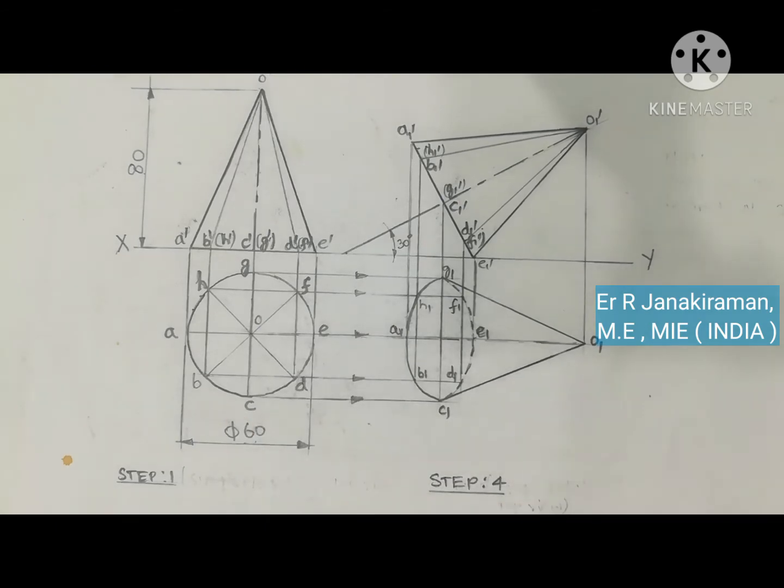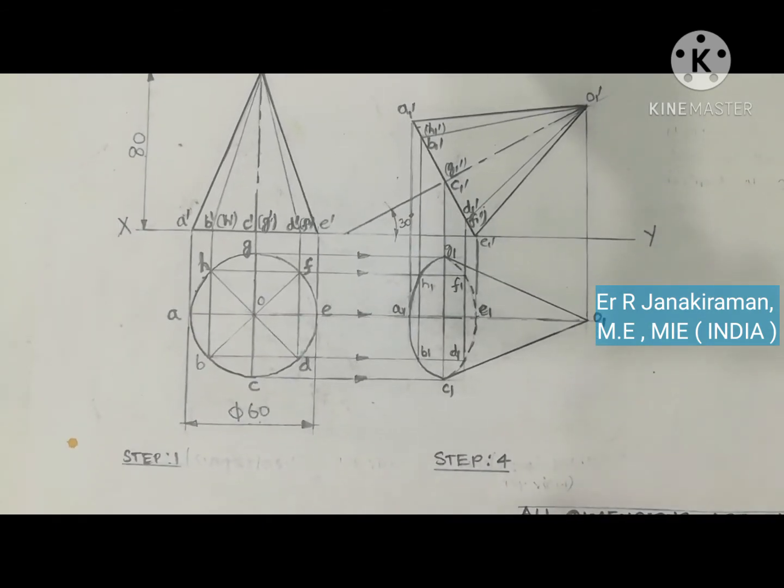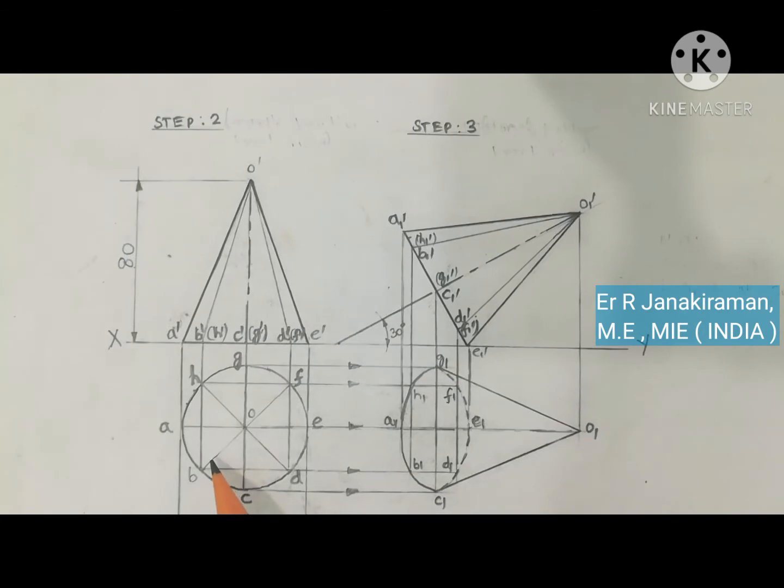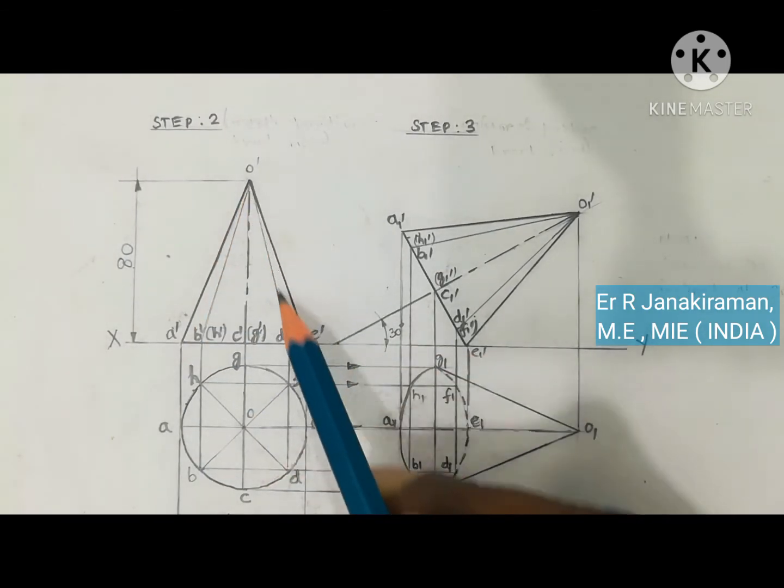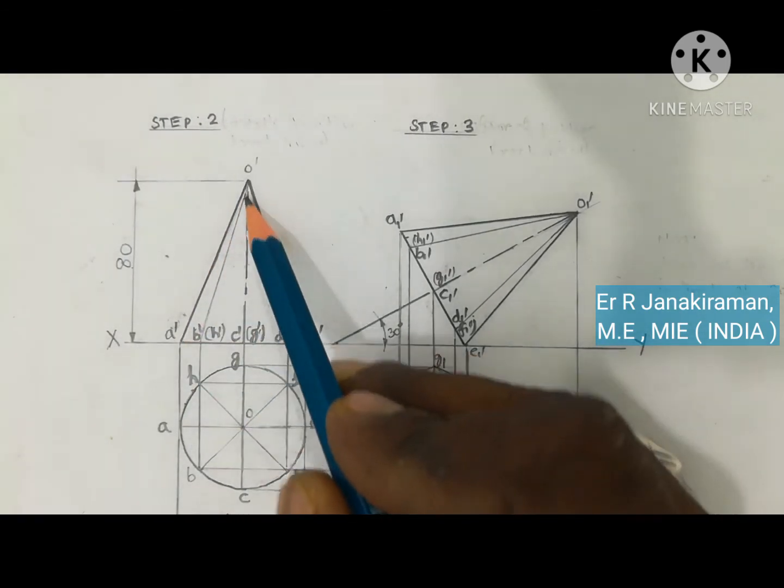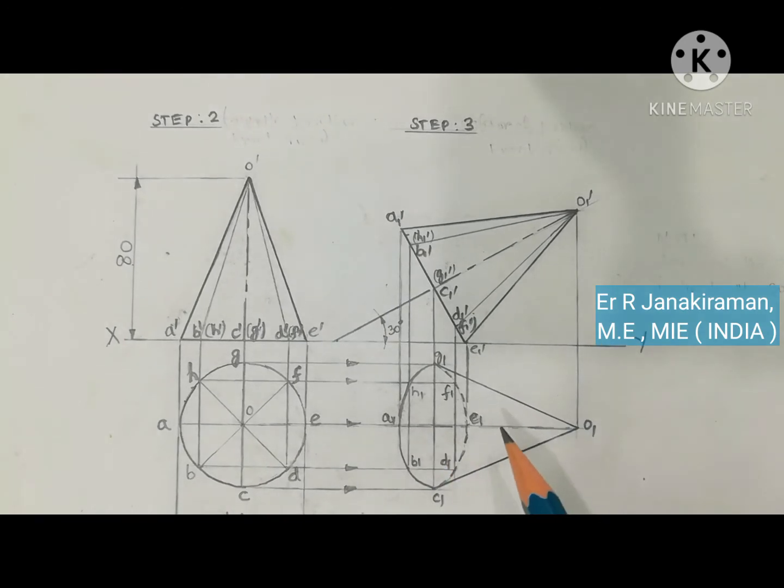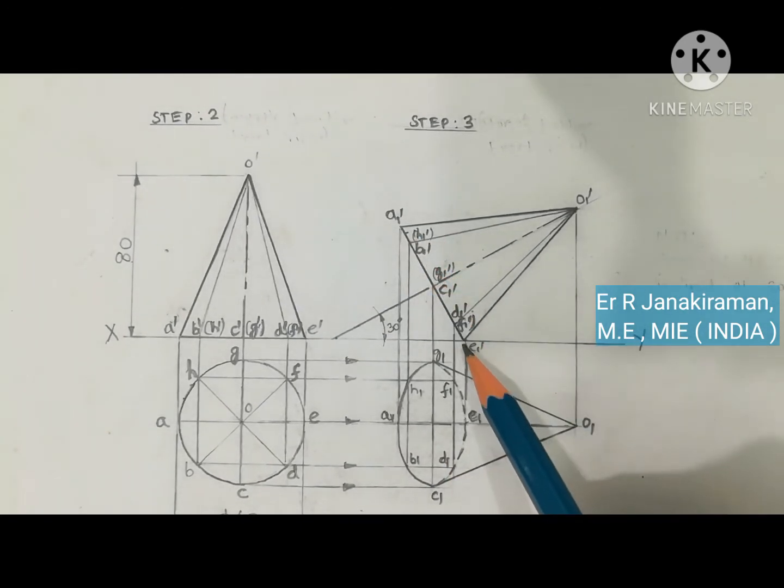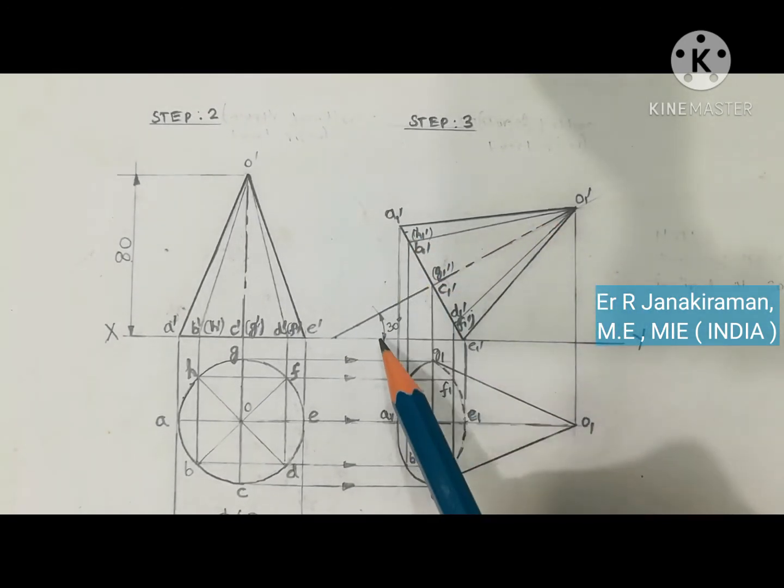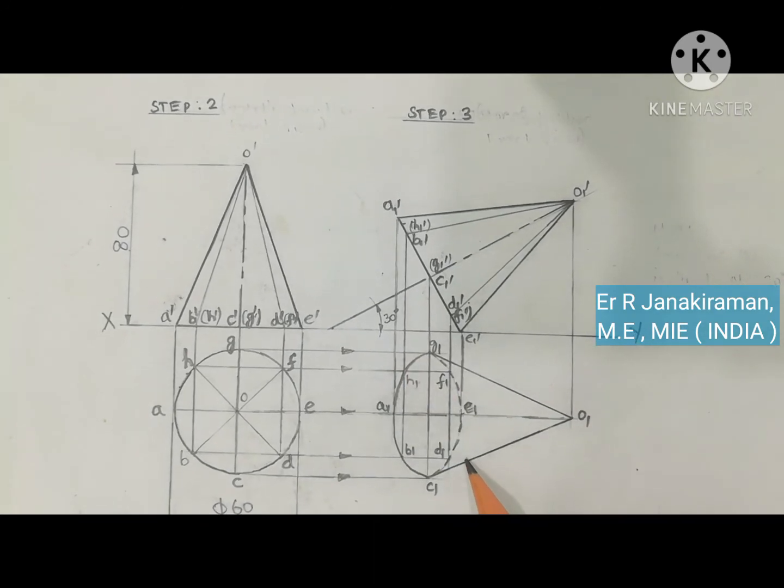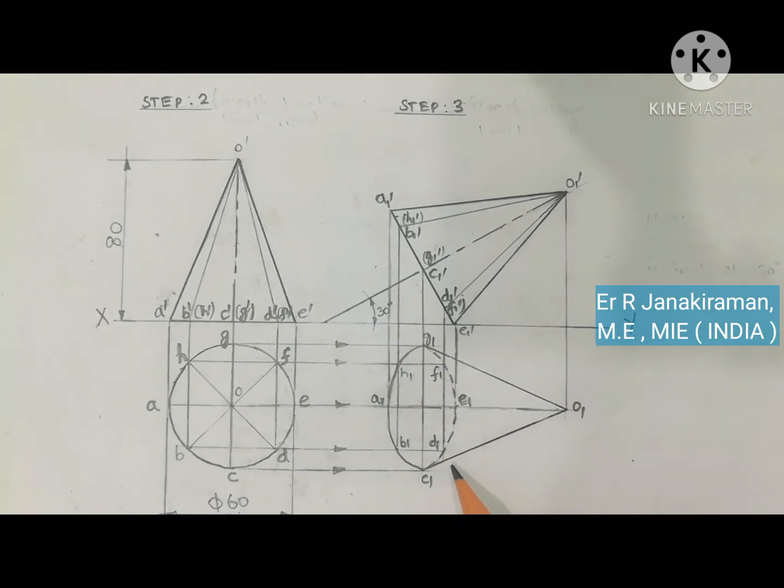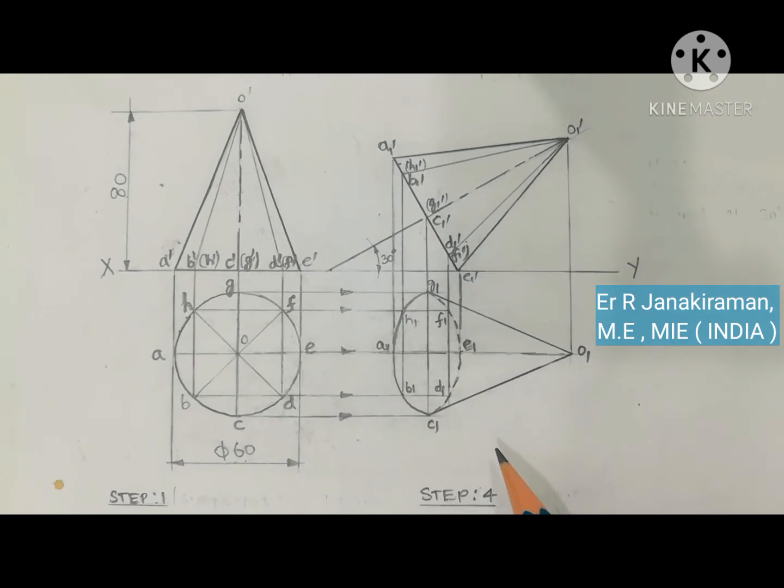This is step 1 diagram. Step 1 diagram is a circle and step 2, triangle will be the front view. The triangle shape is the front view. Third step is to draw this diagram inclined to HP at an angle of 30 degree, and the corresponding top view is shown here. This is the fourth diagram called final top view.